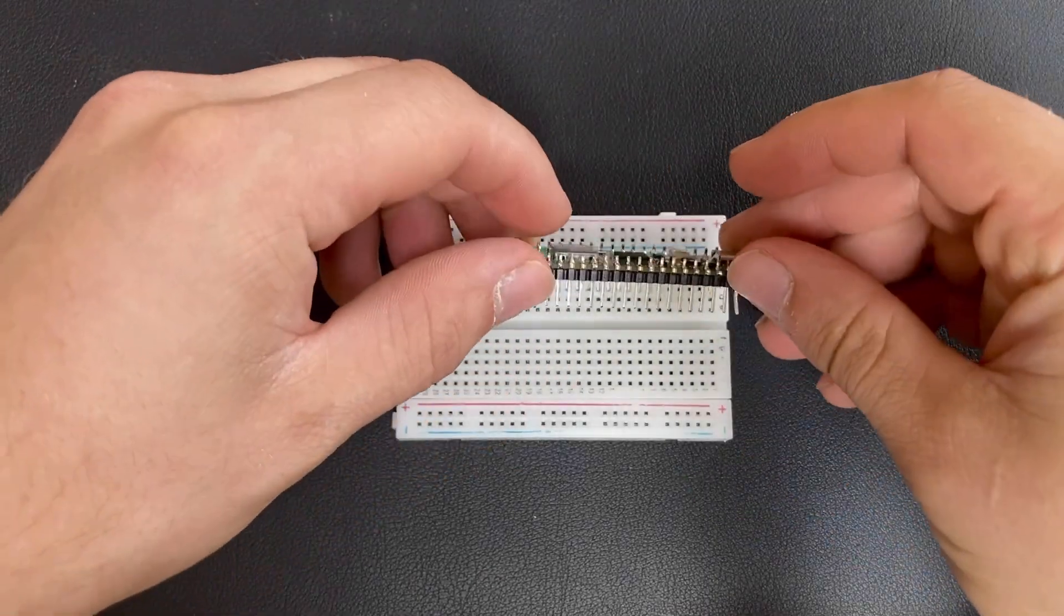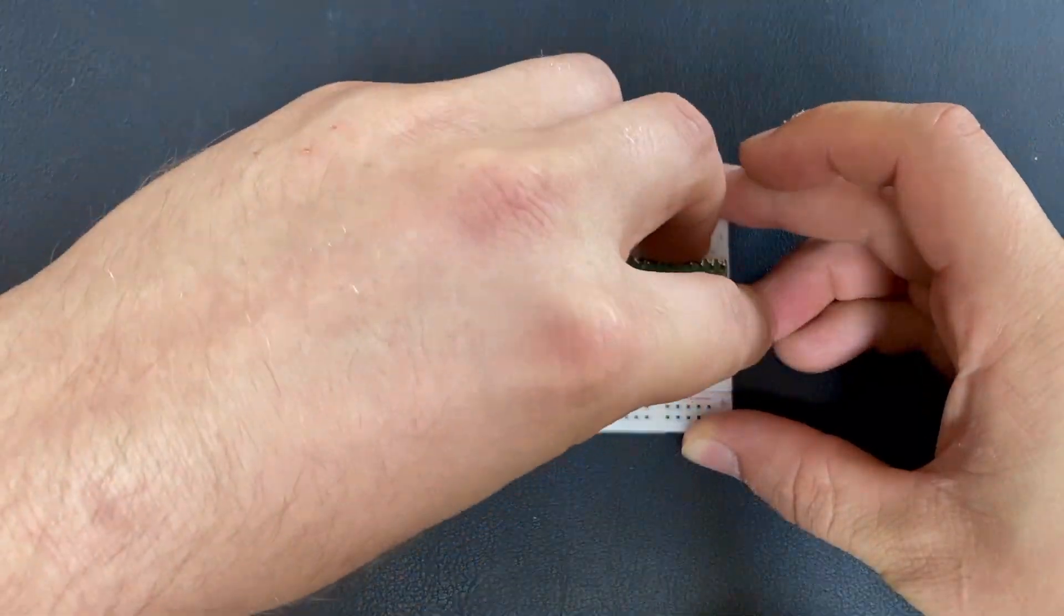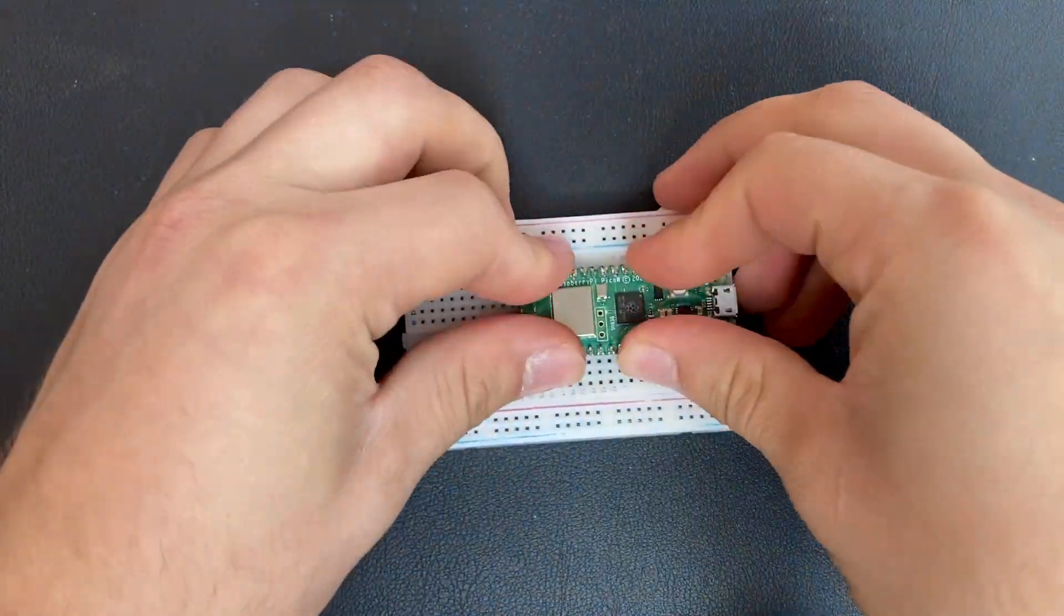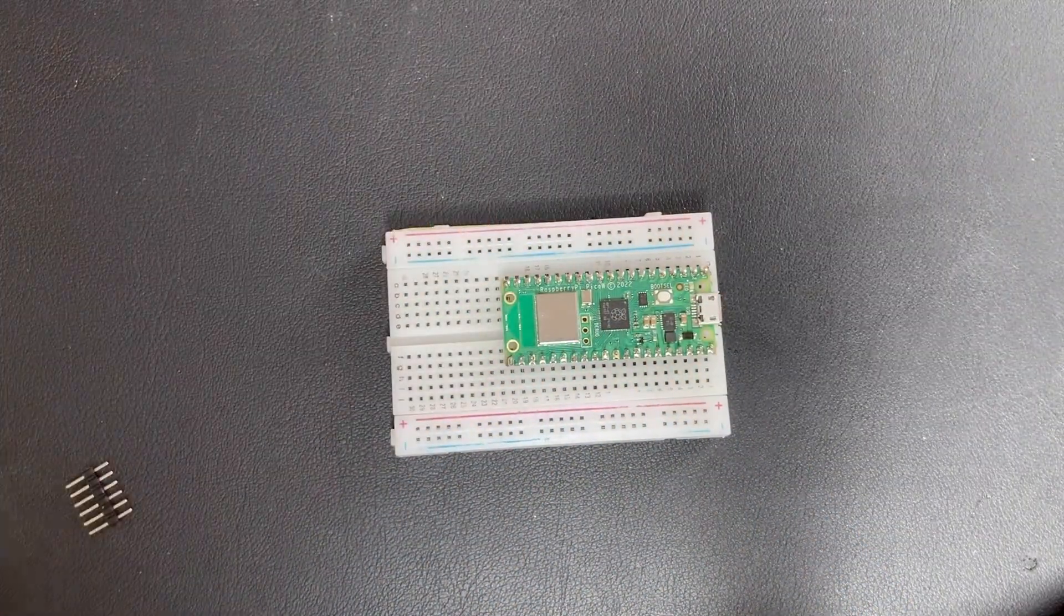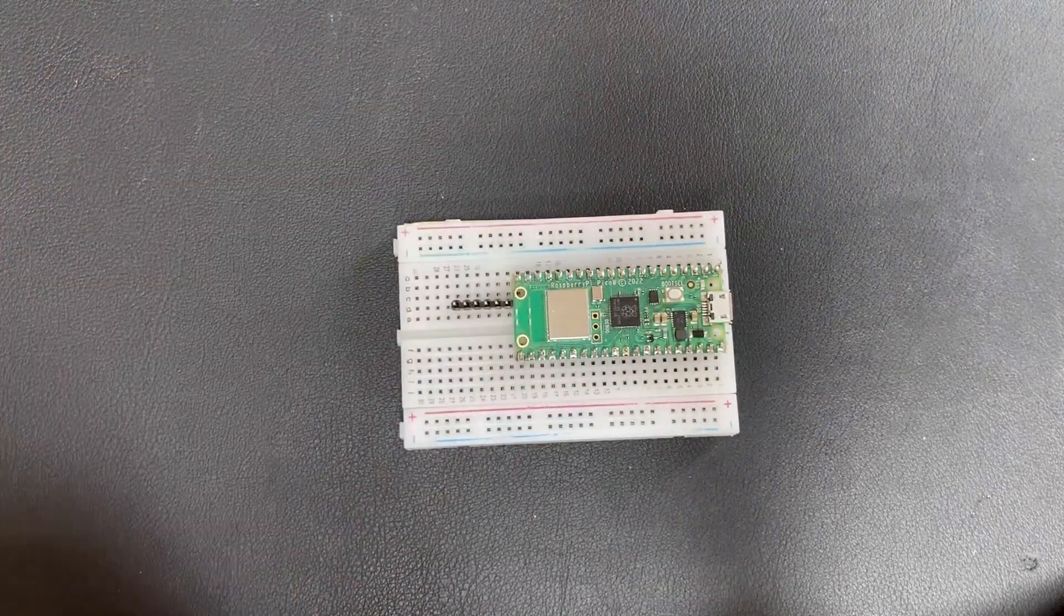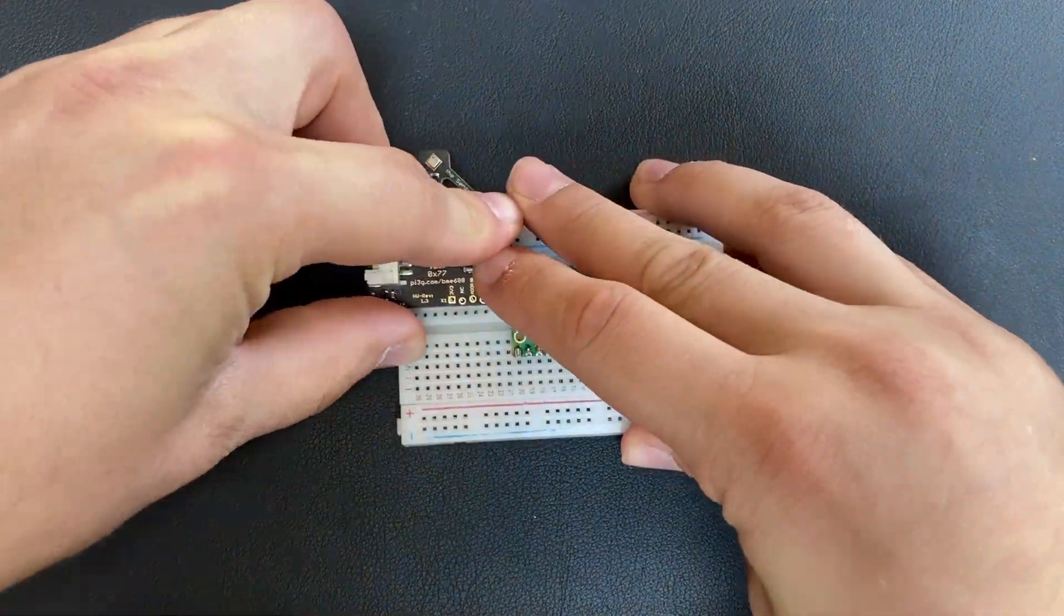I start by placing the Pico W onto a breadboard. This allows me to easily connect all the other components and I can also add some additional sensors later on. Then I place the BME688 breakout board next to the Pico W and wire up its I2C interface.